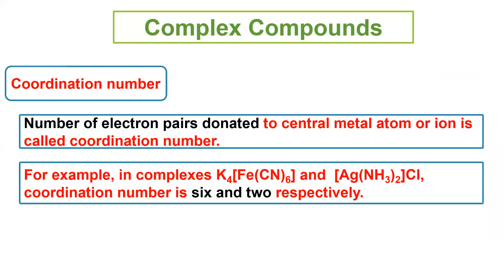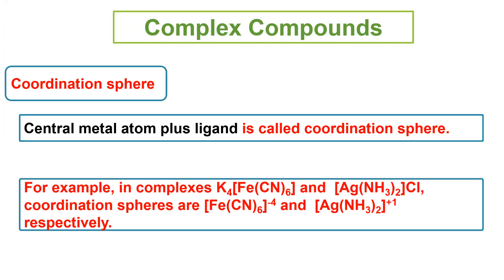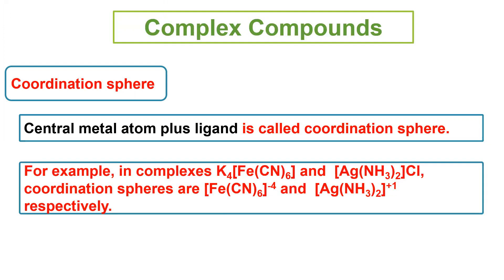Hexadentate ligand atoms: like in K4Fe(CN)6, there are 6 cyanide ligands surrounding iron, so the coordination number of iron in this compound is 6. In Ag(NH3)2Cl, there are 2 NH3 ligands, so coordination number is 2.